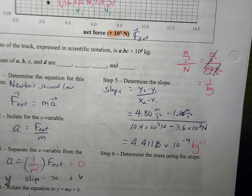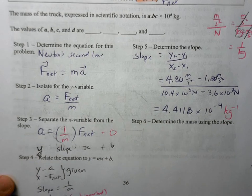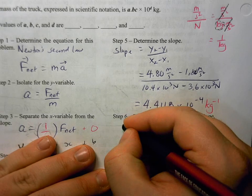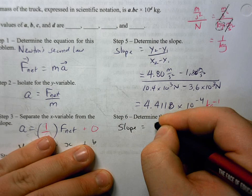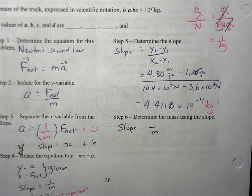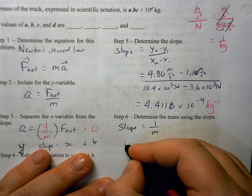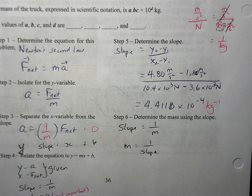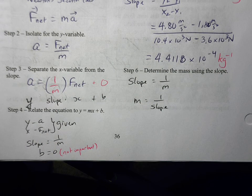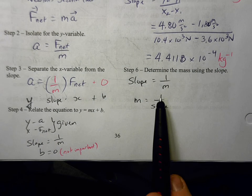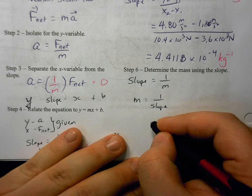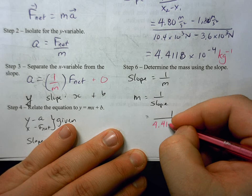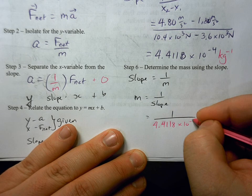So we want to now find the mass using this slope. Well, when we looked at y equals mx plus b, we said that the slope is equal to one over the mass. Or if we rearrange this for m, we know that m is going to be one over the slope. What this is trying to tell us is that the mass of this truck is going to be one divided by the slope that we had just calculated.